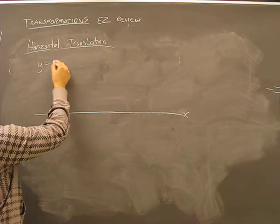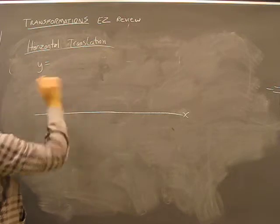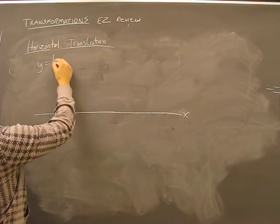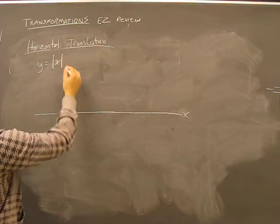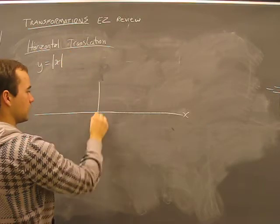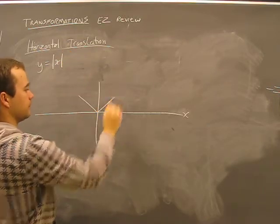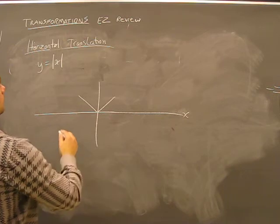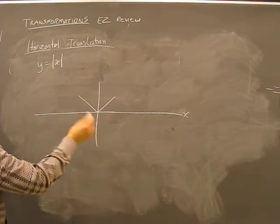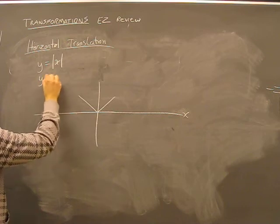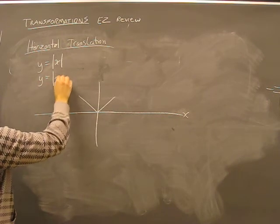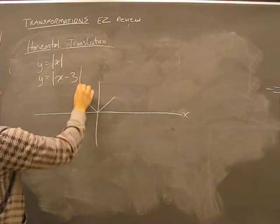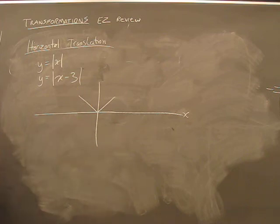So if you had y equal, we'll use the absolute value. Y equal the absolute value of x by itself. And we wanted to show a translation either way. We would mess with the x section.